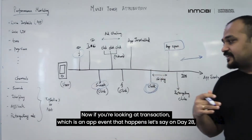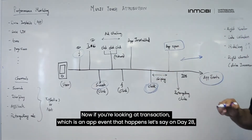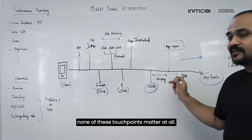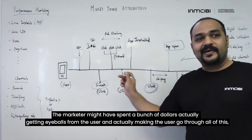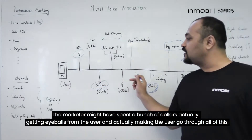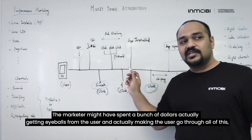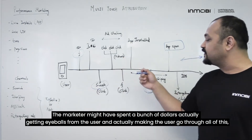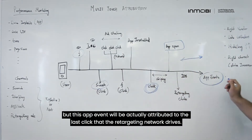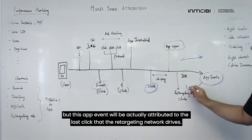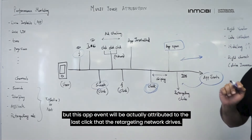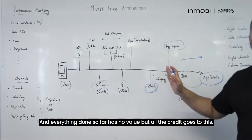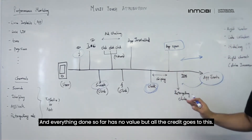If you're looking at a transaction, which is an app event that happens let's say on day 28, none of the earlier touch points matter at all. The marketer might have spent a bunch of dollars getting eyeballs and guiding the user through the journey, but this app event will be attributed to the last click that the retargeting network drives. Everything done so far has no value — all the credit goes to that last click.